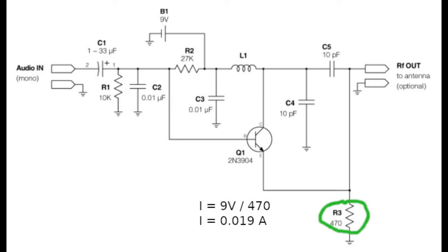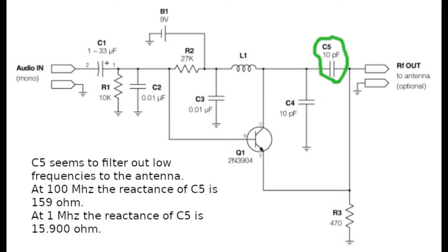Also the current in the LC tank might be limited. The purpose of C5 seems to be to filter out low frequencies for the antenna. At 100 MHz the reactance X of C5 is 159 ohms.